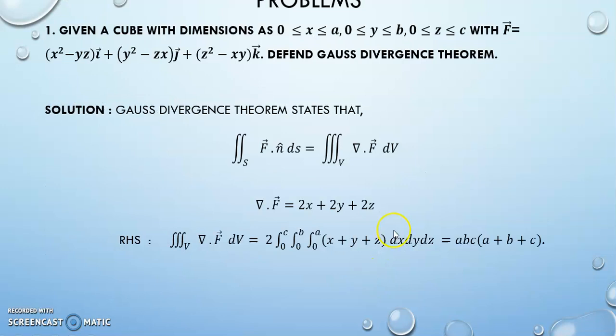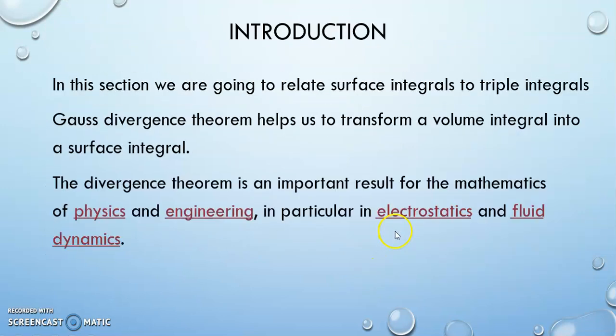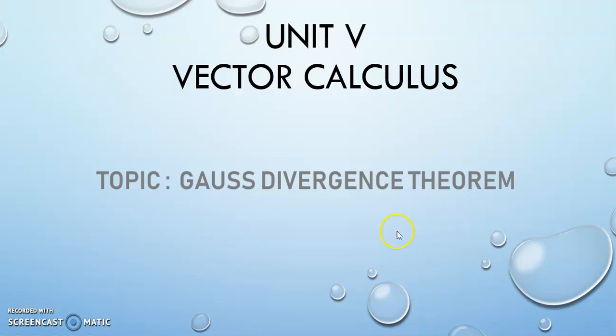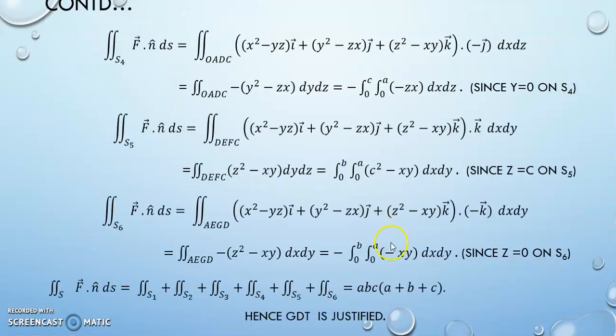Just skip the slide. Okay, so we have 6 surfaces here and so when we take the dot product between that vector and k vector, you will be getting the negative of it.